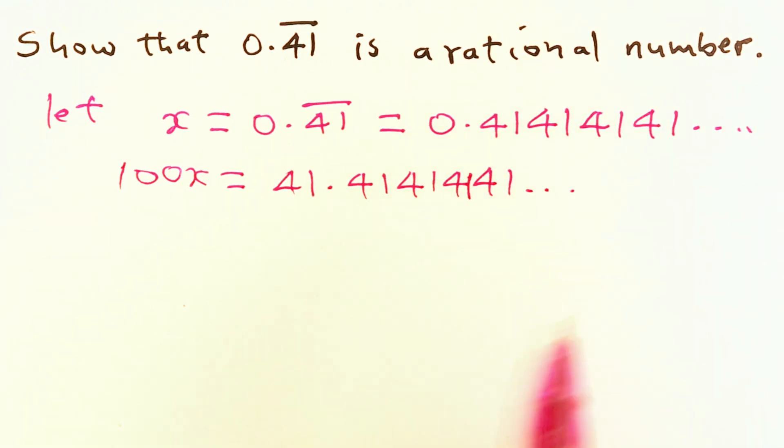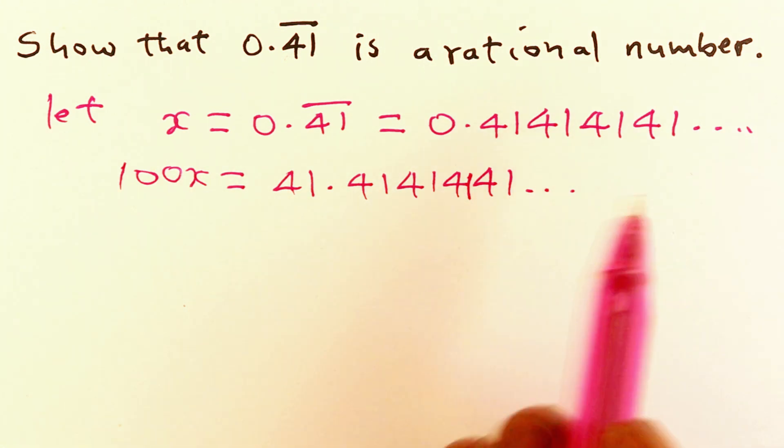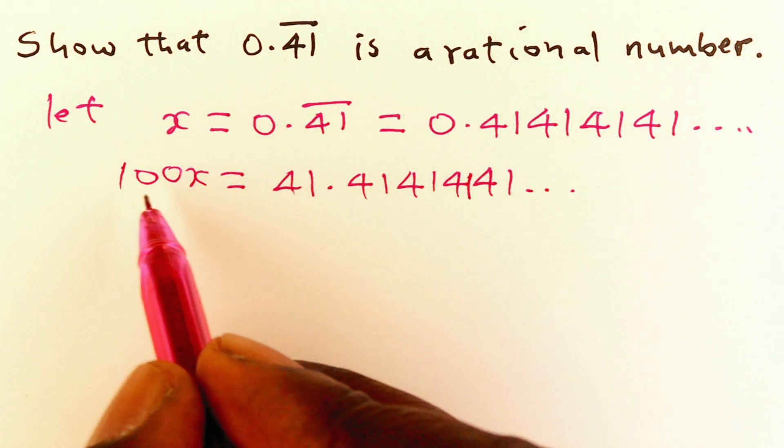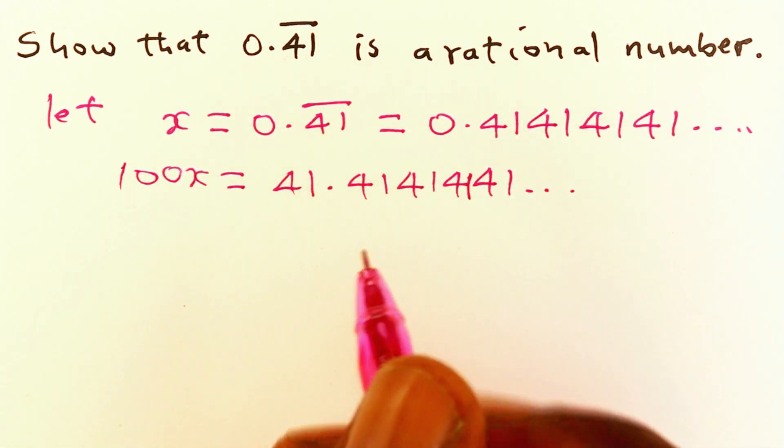The next thing is to get the difference between the two equations. We just take the second equation and subtract the first equation to see what we have.